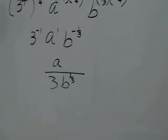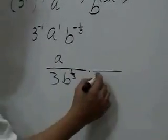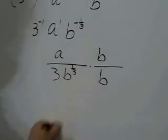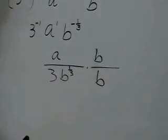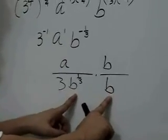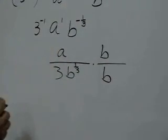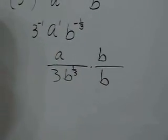But now we have a fractional exponent, and to remove that, we multiply both the numerator and the denominator by a b term with an exponent which will make this product equal to a b term whose exponent is an integer.